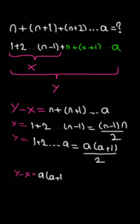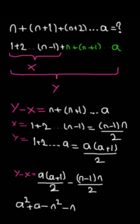Then, we have something like A multiplied by A plus 1 divided by 2 minus n minus 1 multiplied by n divided by 2. Now, if we do multiplications, we would have something like A to the second power plus A minus N to the second power minus n divided by 2.